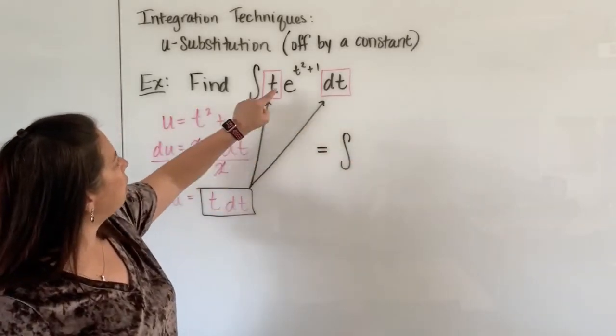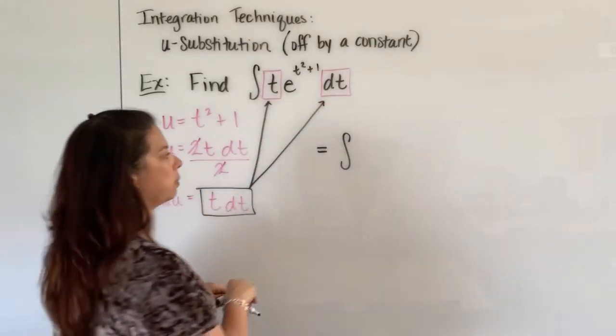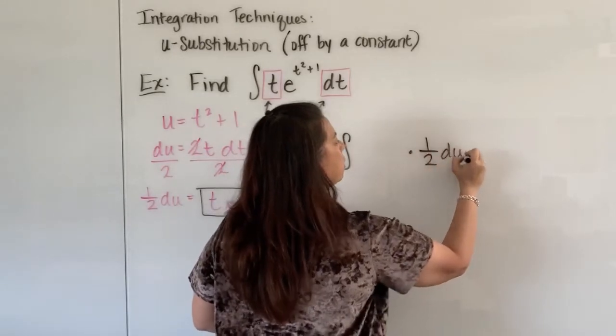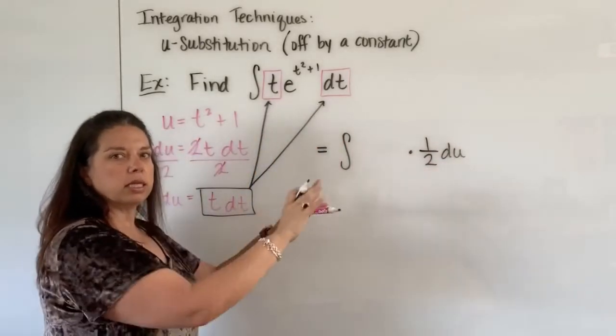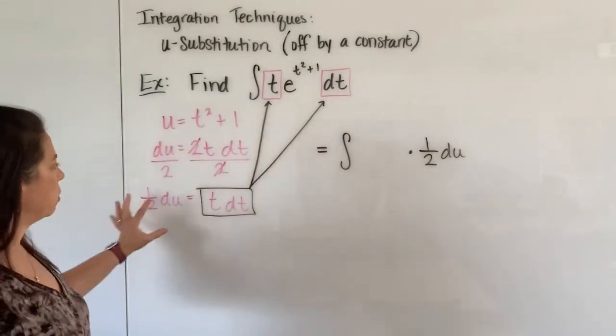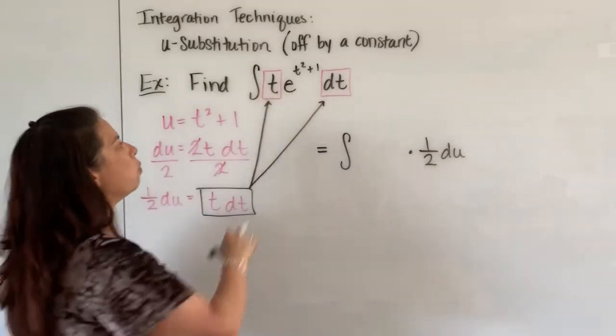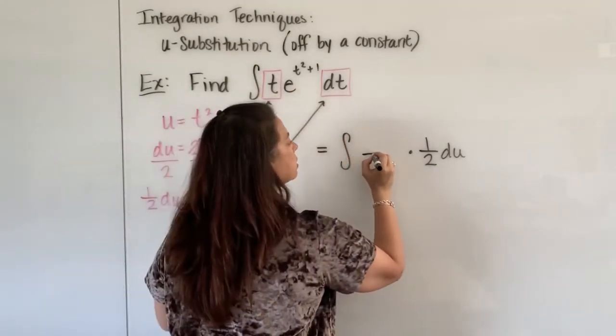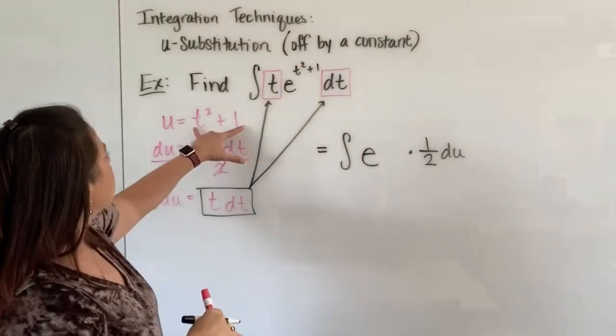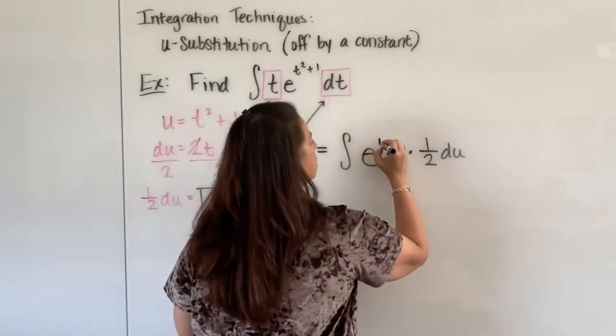So we have the integral of, well again t dt gets exchanged out for 1 half du. Let me put that at the end here times 1 half du. I tend to put my d whatever's right towards the end, the back end of the integrand. So that's why I'm going to choose to do that. So those have been exchanged out. What's left though is still this e to the power but I can't use t squared plus 1 in its place. I'll put in my u. So I have e to the u.